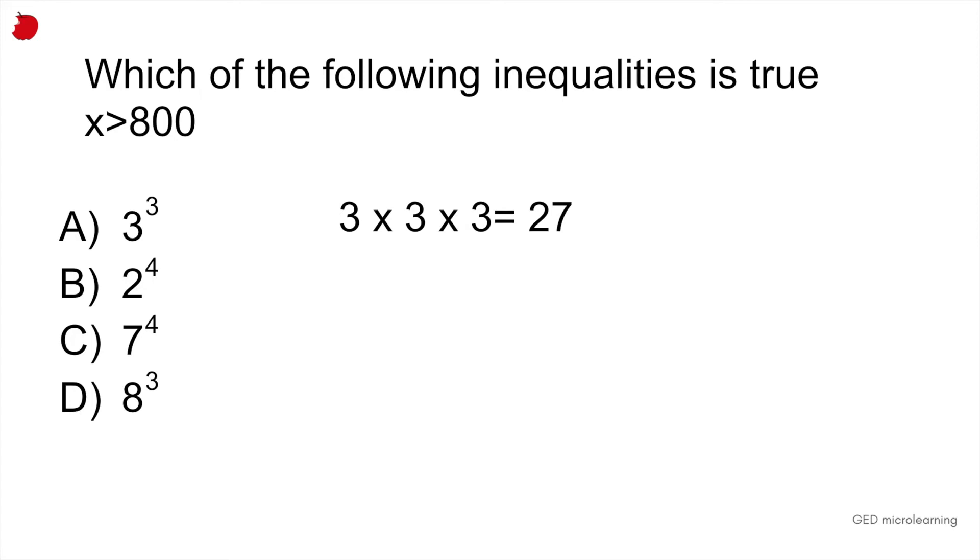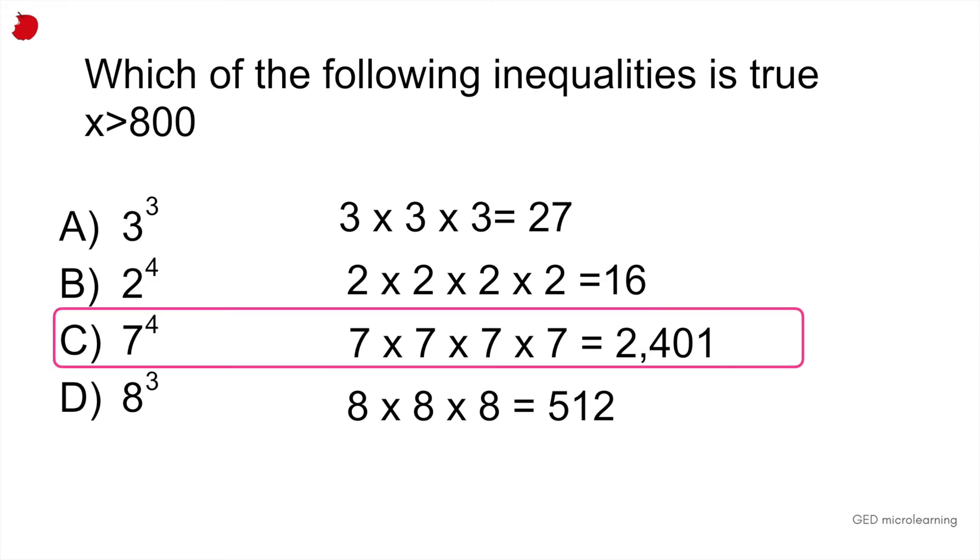And then 2 raised to the 4th power, letter b, would be the same thing as saying 2 multiplied by itself 4 times. So you go down the line, solving the exponents, and you get that c is equal to 2,401, and d is going to be equal to 512. And the question is asking you which of the following is true, where the value has to be more than 800. So our correct answer would be c.